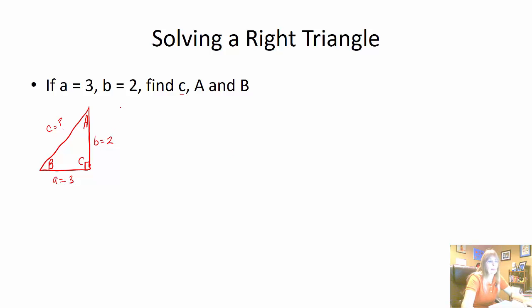So the hypotenuse is probably the easiest one first, right? Because we can use the Pythagorean Theorem. C squared equals A squared plus B squared. So C squared equals 3 squared plus 2 squared. So C squared equals 9 plus 4. C squared equals 13. C equals the square root of 13.